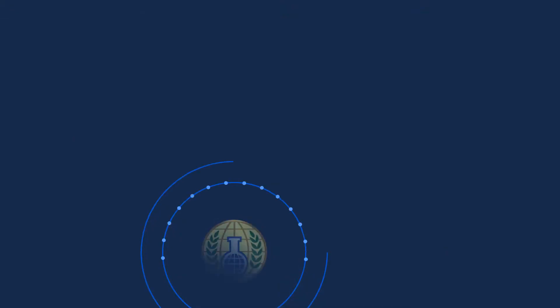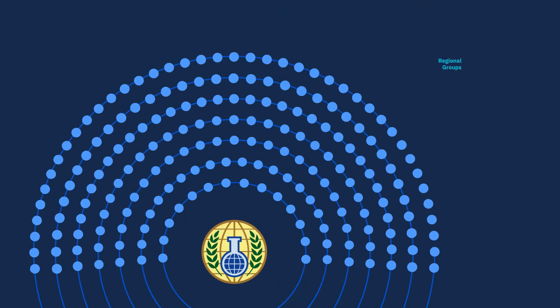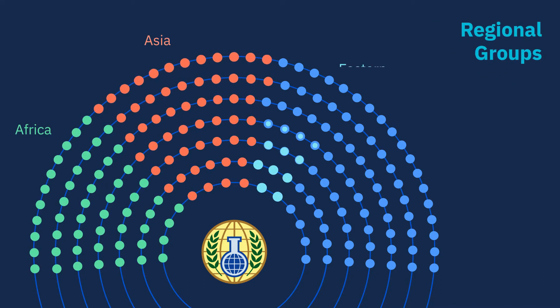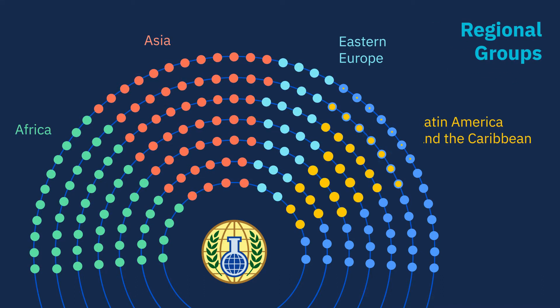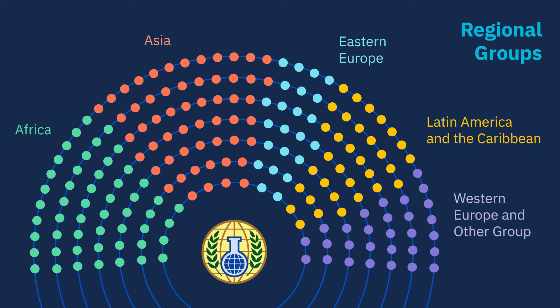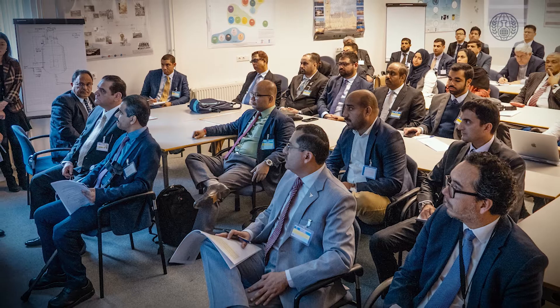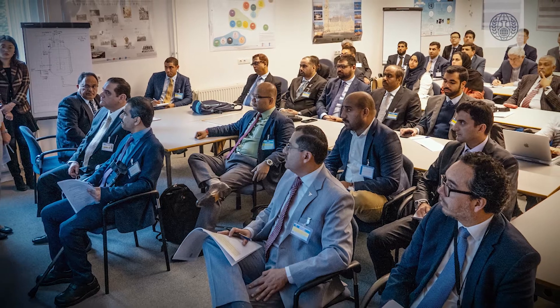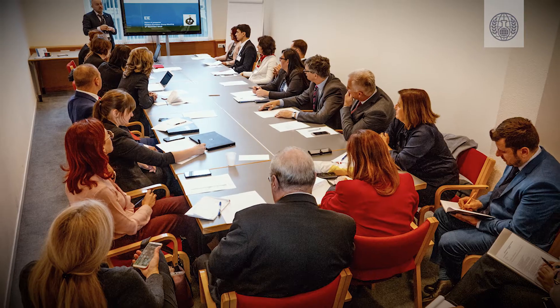Member states are organized into regional groups: Africa, Asia, Eastern Europe, Latin America and the Caribbean, and Western Europe and other groups. These groups facilitate the coordination of policy positions and help formulate consensus.